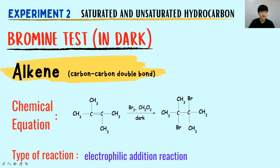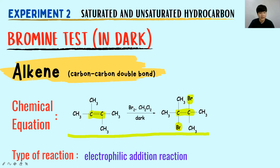Let's look at more examples of the chemical equation for alkene. We still focus on the carbon-carbon double bond — it doesn't matter how many carbons you have; what's important is where your carbon-carbon double bond is. The double bond breaks into a single bond and Br is added to the carbons that held the double bond. For example, a 6-carbon alkene C₆H₁₂: the number of carbons may change, but the process remains the same.